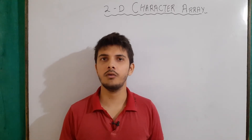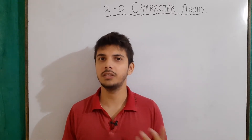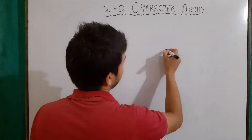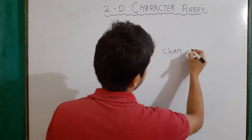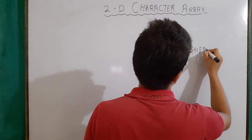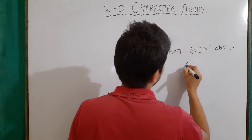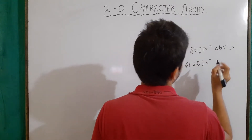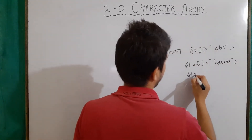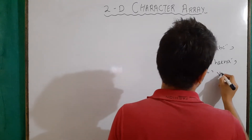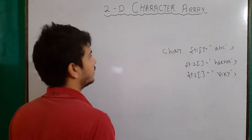First, let's talk about why we require two-dimensional arrays. Let's say I want to store the name of three students. What I will do? I will simply make one-dimensional character arrays for three students. Let's say for student one, the name is ABC. Then for another student, the name is Hina. And for the last student, something like Vicky. For three names, I am using three variables.